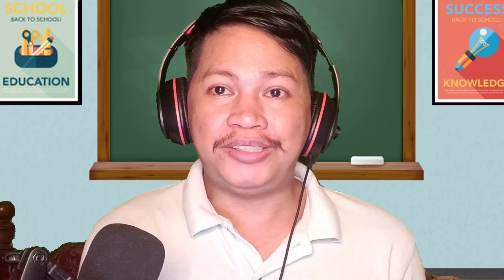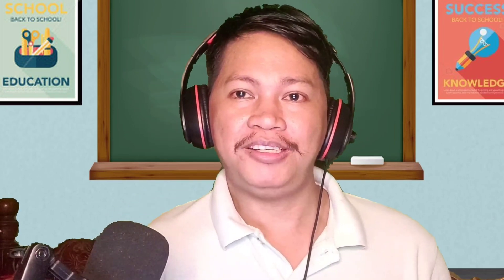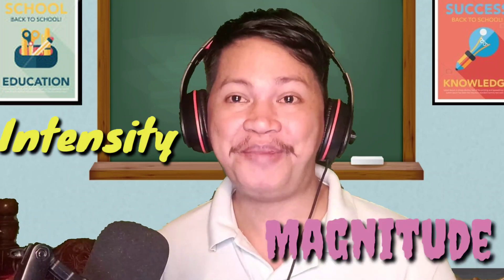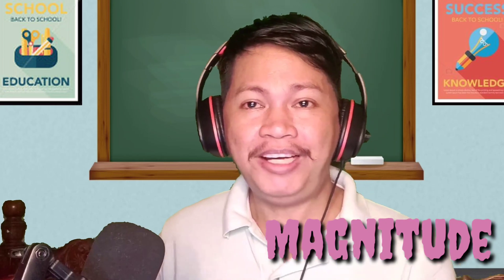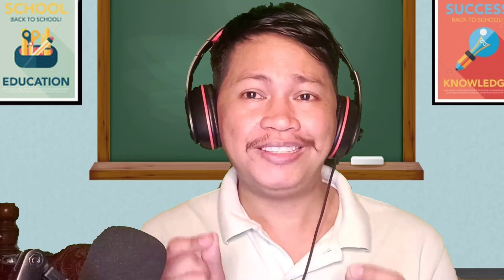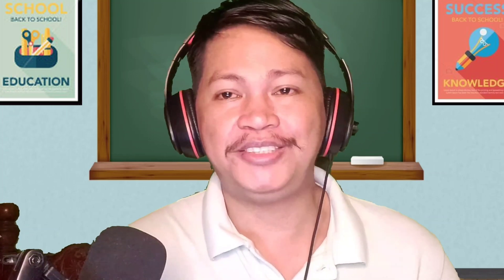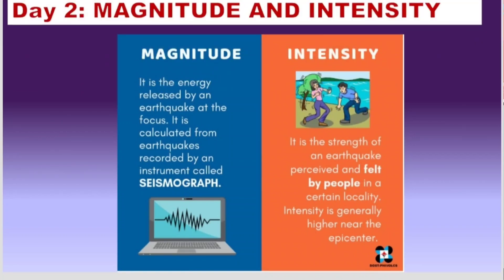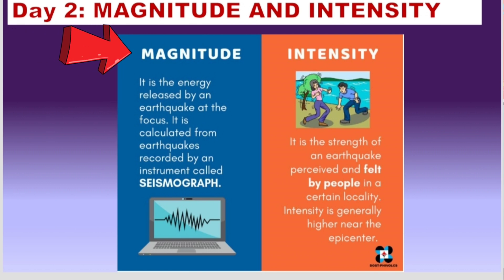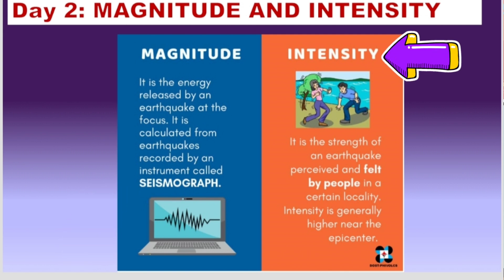Let's now proceed to intensity and magnitude. What's the difference between these two terms? Magnitude is the energy released by an earthquake at the focus; it is calculated from earthquakes recorded by an instrument called a seismograph. Intensity is the strength of an earthquake as perceived and felt by people in a certain locality. Intensity is generally higher near the epicenter.